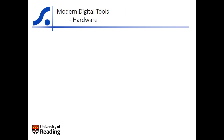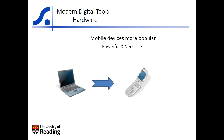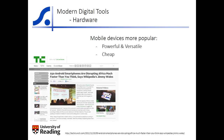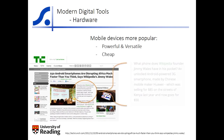In recent years, mobile devices have been one of the fastest growing sectors in digital technology. You no longer need dedicated handheld devices for data entry. A modern smartphone can be as powerful and versatile as a laptop, and much easier to carry around. Price is also becoming less of a barrier. An Android-powered smartphone can be bought for as little as US$50, and for only a few dollars more, you can get a very powerful device.